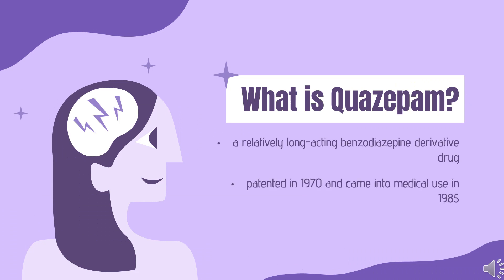What is Quazepam? Quazepam, sold under the brand name Doral among others, is a relatively long-acting benzodiazepine derivative drug developed by the Schering Corporation in the 1970s. Quazepam is used for the treatment of insomnia, including sleep induction and sleep maintenance. It was patented in 1970 and came into medical use in 1985.